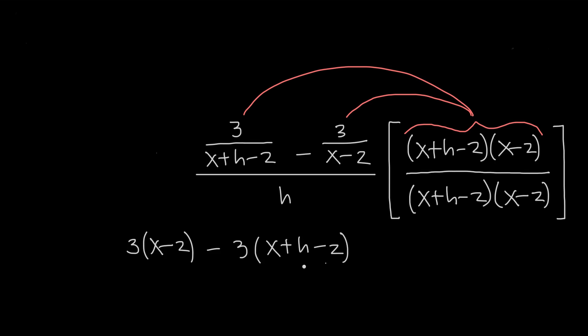And in the denominator, we get h multiplied by the common denominator. And just like that, you've eliminated the little fractions in one easy step.